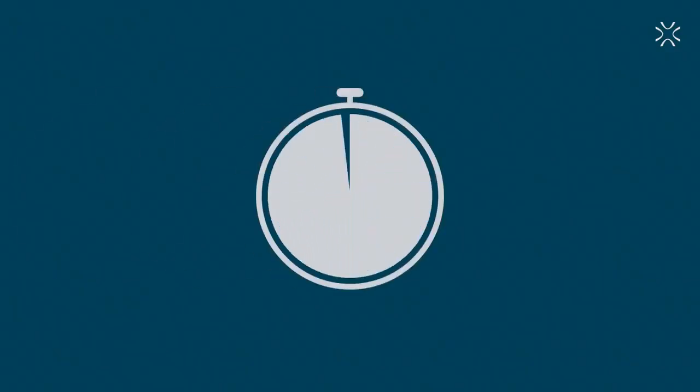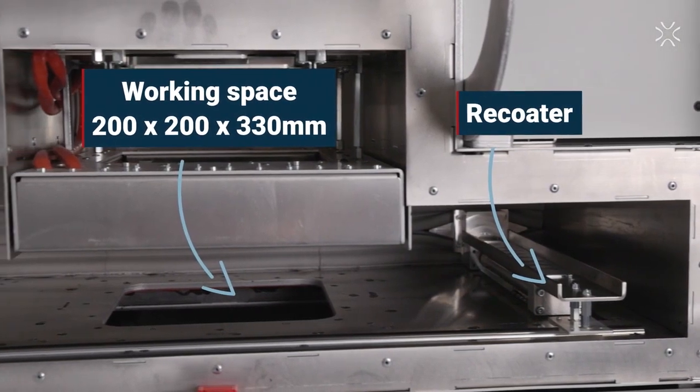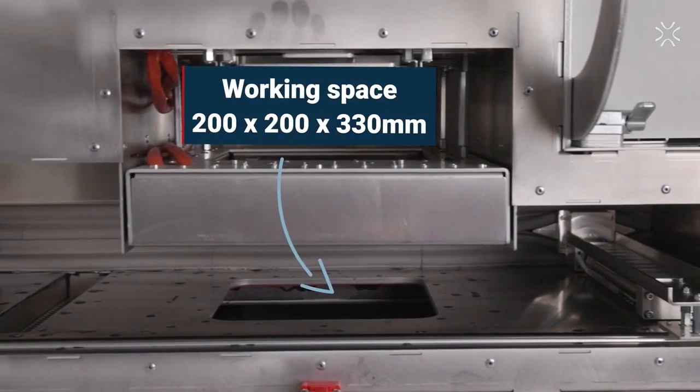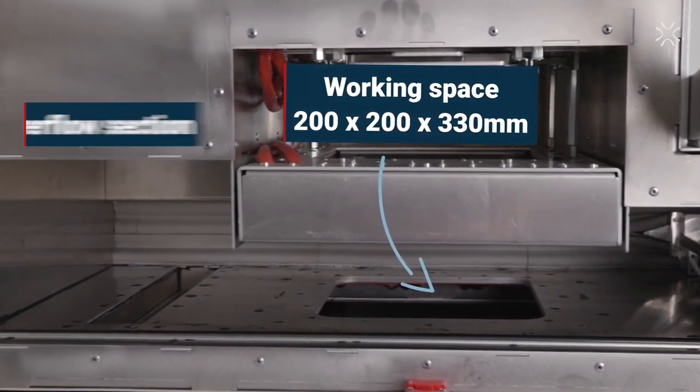In combination with these high printing speeds, which can reach up to 40 mm per hour, the build volume of 200 mm in length and width and 330 mm in height ensures maximum efficiency in serial production.